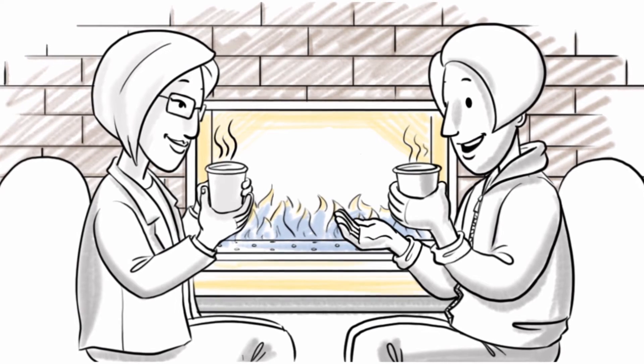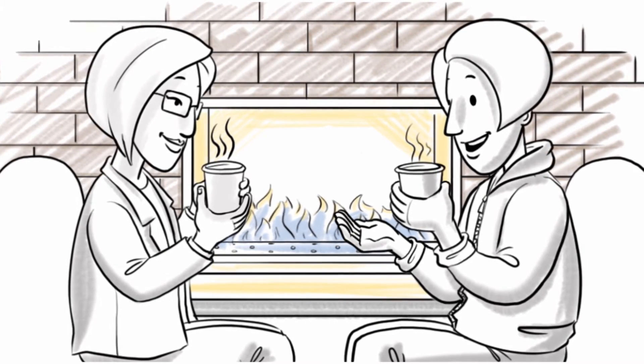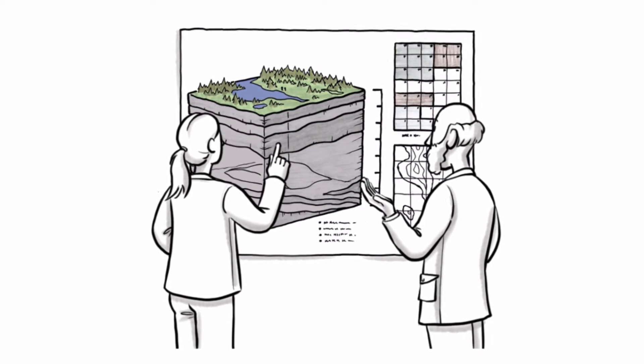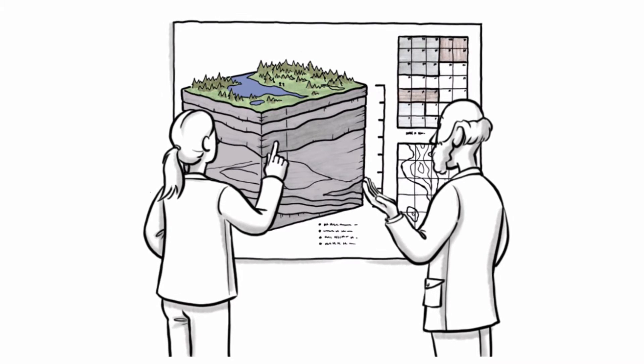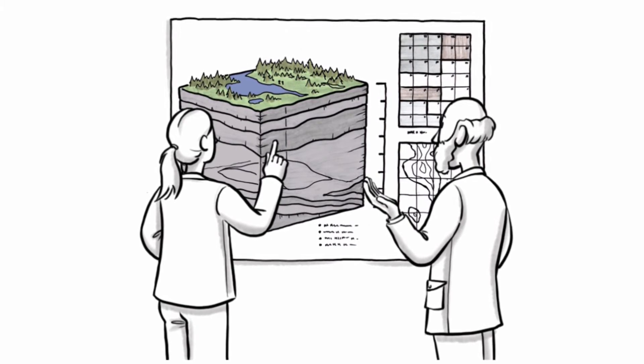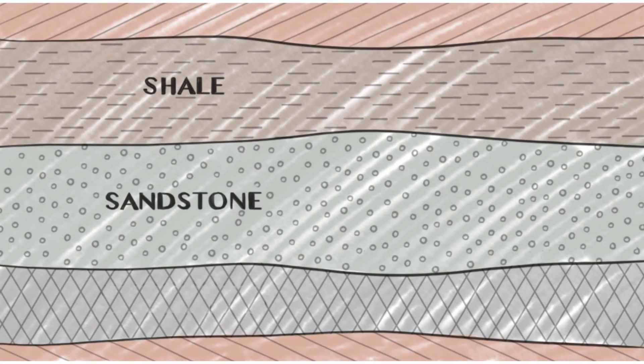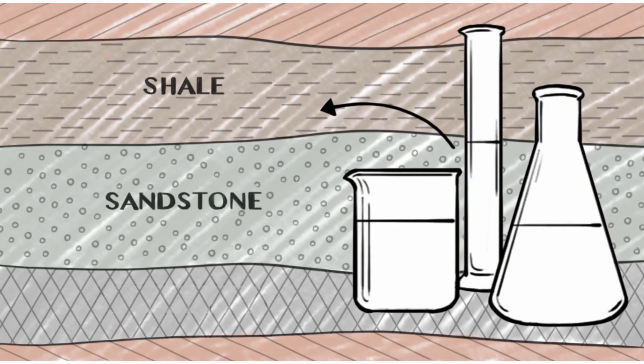Keith has heard a lot about fracturing fluid and wonders what it is and what's in it. Michelle tells Keith that the fluid an operator uses depends on factors such as depth and location of the well and the kind of rock that holds the oil and gas. For example, water-based fluids are used to recover gas from a rock called shale. Chemicals can be added to the water to make it more slippery. Because of this, the fluid can be pumped down faster and under less pressure.